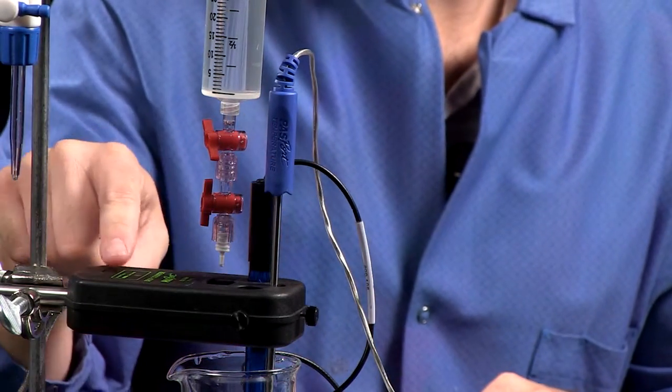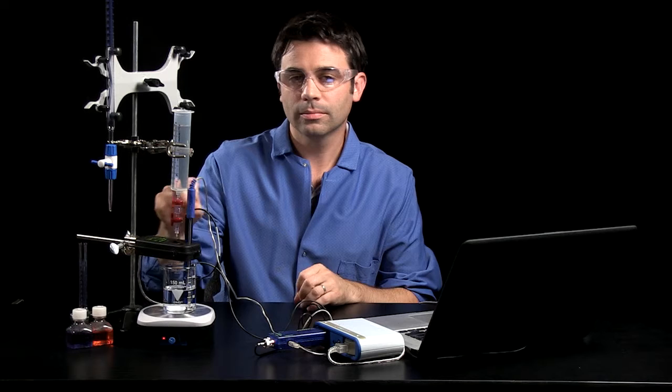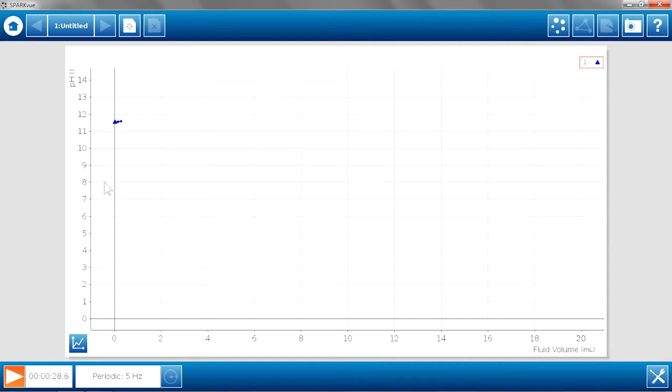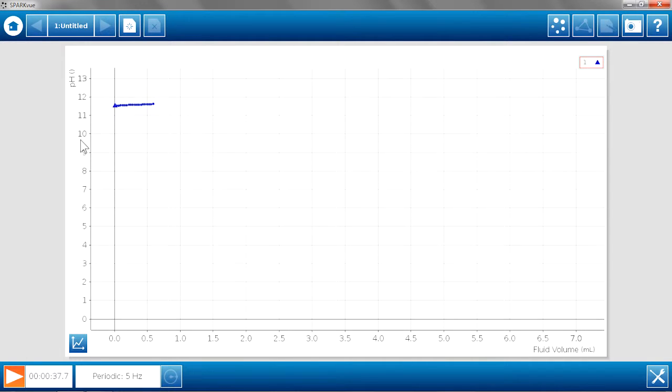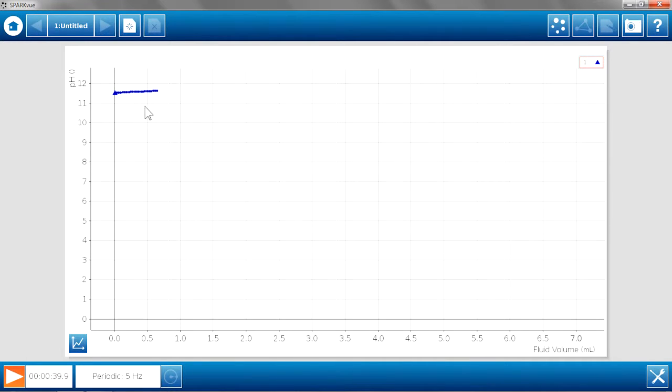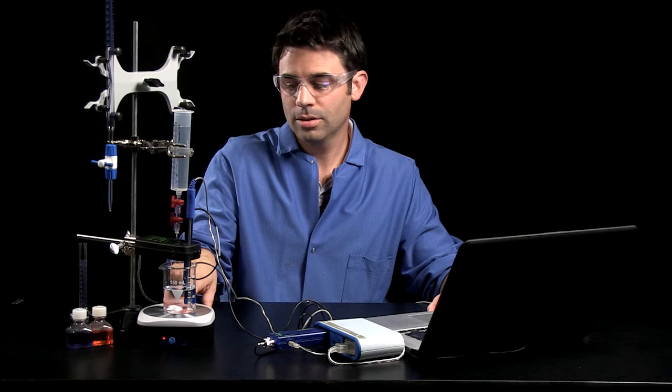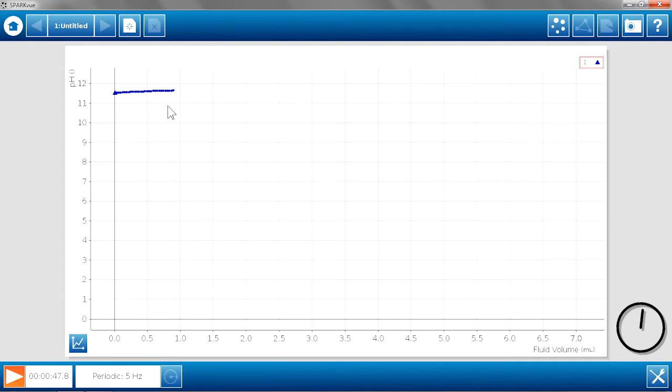And as a drop goes through, the LED light in here blinks so that you know that a drop is being collected. And I'm going to rescale my graph a little bit. Here's my initial pH. Very high because I'm titrating sodium hydroxide with hydrochloric acid. And we'll let this go and see how the titration curve looks.